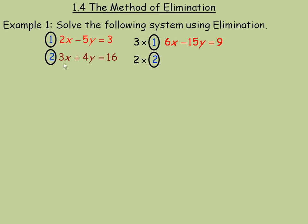And the second equation is multiplied by 2, so multiplying everything here by 2, 3x becomes 6x, 4y becomes 8y, and 16 times 2 is 32. Now, notice now, these two equations both start with a 6x.